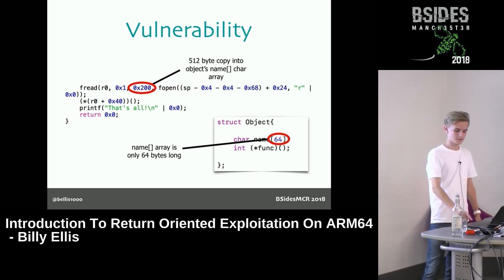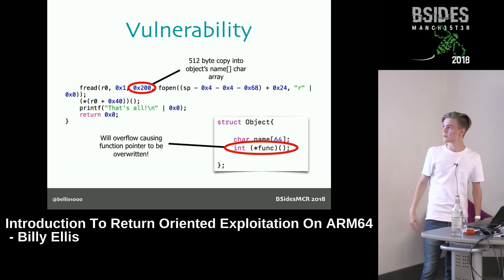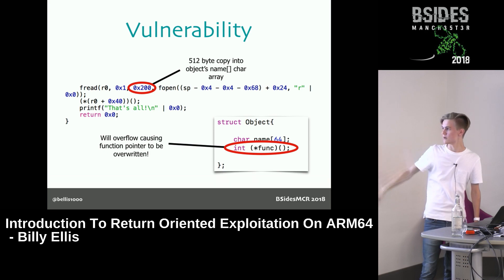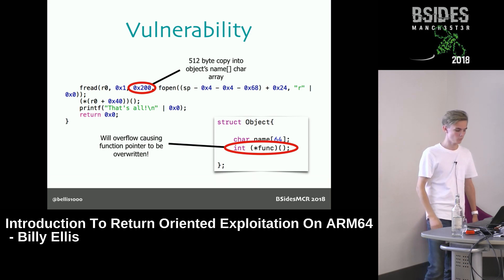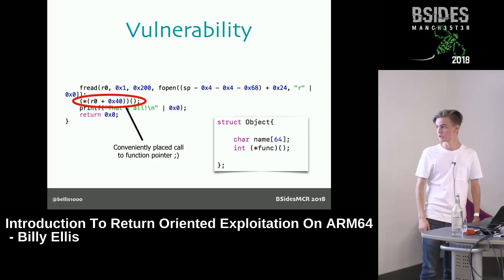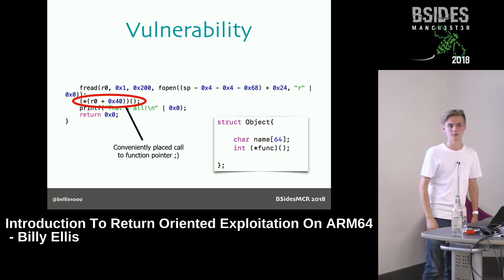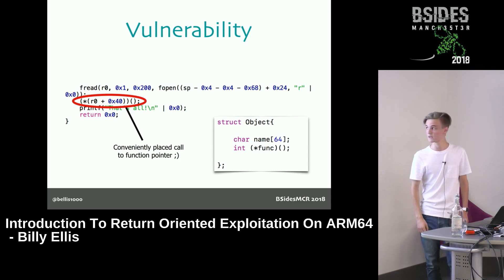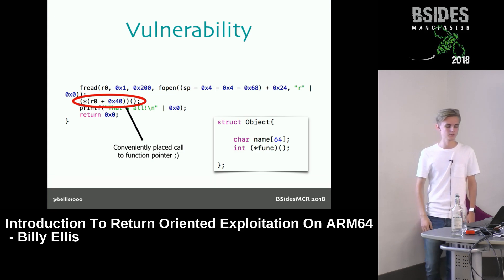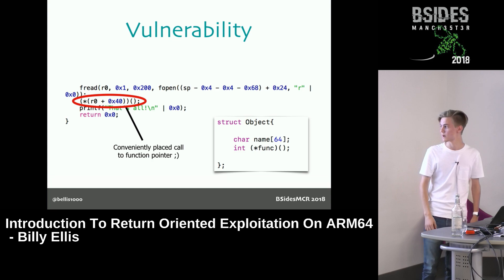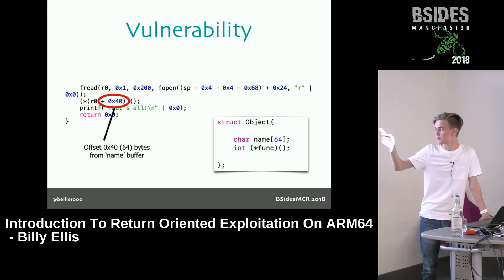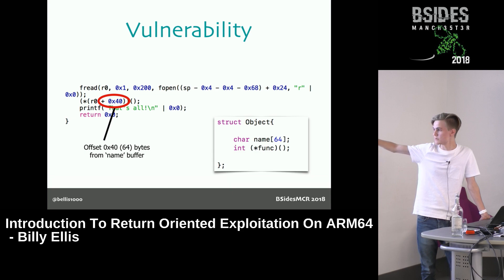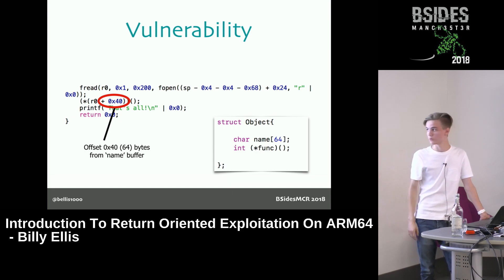Conveniently, there is a function pointer directly next to this buffer. Any extra data beyond the 64 bytes will be written directly over this function pointer, which is then called directly after the fread. This is a very artificial case — a real-world vulnerability would not be as simplistic — but it serves well for demo purposes. The offset from the structure on the heap is 64 bytes along, after the buffer, and it calls that function pointer.